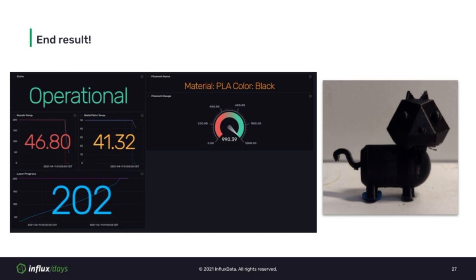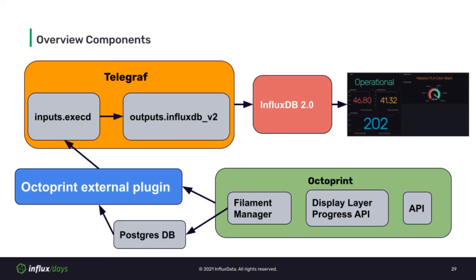Well, almost — his chin did fall off during the print, but we'll pretend that was intentional. There were 202 layers in this print, and the filament gauge dropped by 5 grams, with the nozzle and build plate now cooling off. You might have noticed the temperature for the nozzle and build plate rising and dropping a lot, but if you looked at the y-axis it was only changing about a degree both ways. The filament gauge also didn't change until the very end, which is a limitation in the Filament Manager plugin where it only updates after a print — maybe a future improvement would be to have it update during a print.